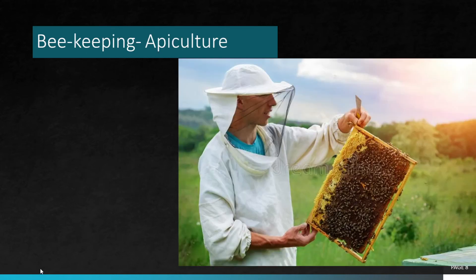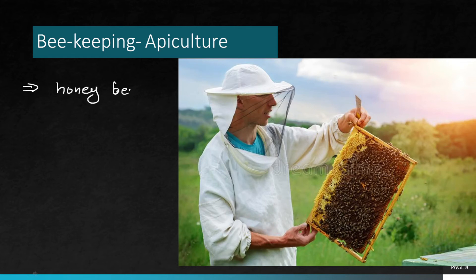Then after that we have beekeeping and apiculture. Beekeeping, which we call apiculture, is the domestication of honeybees. It is a very dangerous practice — as you can see here, there are a lot of honeybees present. Beekeeping or apiculture is the rearing of honeybees for the production of honey and wax.